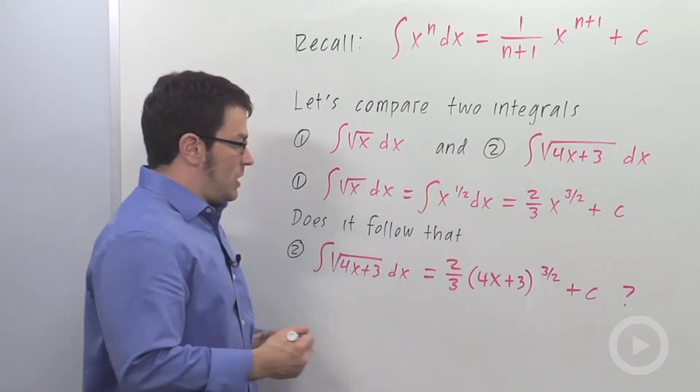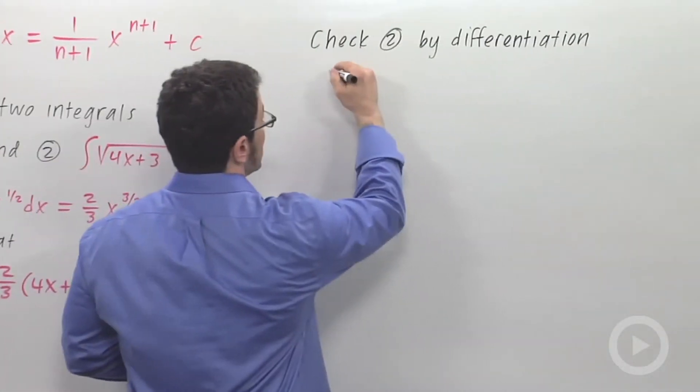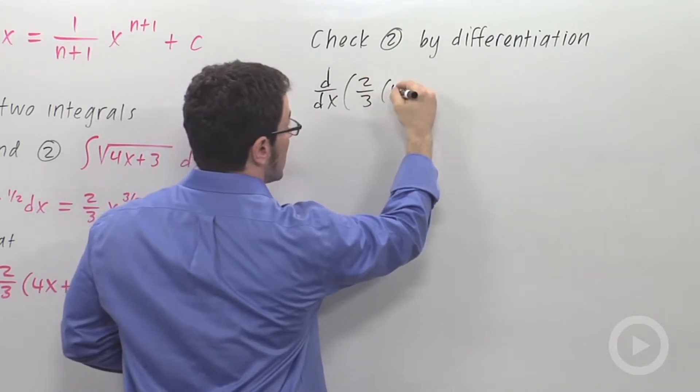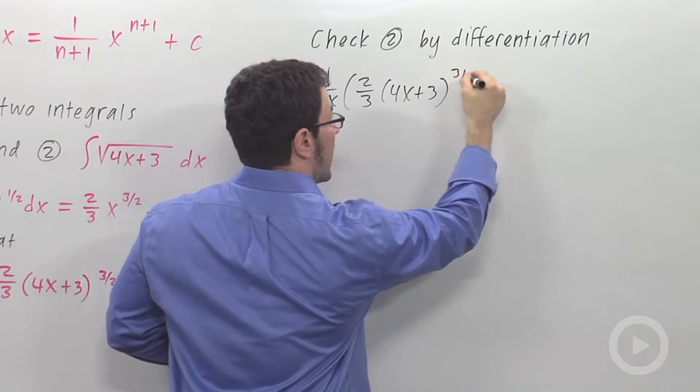I want to check this answer by differentiation to see if it's correct. So let me take this answer and differentiate it, and I have 2 thirds, 4x plus 3 to the 3 halves plus c.